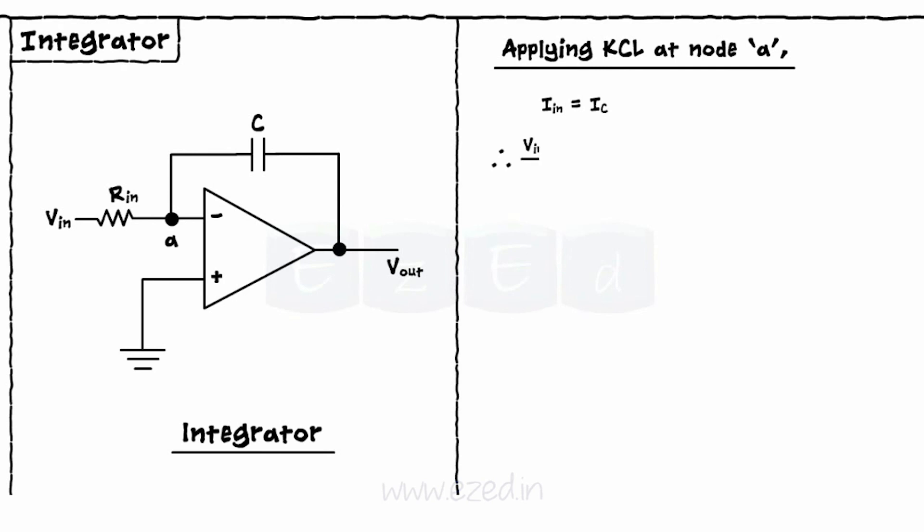Hence, Vin minus VA upon Rin equals minus C into dVC by dT. Therefore, Vin minus VA upon Rin equals minus C into d by dT of Vout minus Vin.